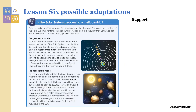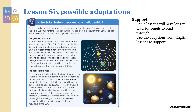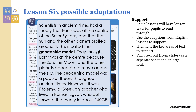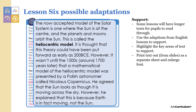In some lessons, like in lesson six, there will be larger areas of text for pupils to read through. You could use the support or adaptations you have in English and reading lessons here. You could highlight key areas of text for support, or you could print the text out using the corresponding slides as a separate sheet and enlarge the font. You could even also highlight this text.